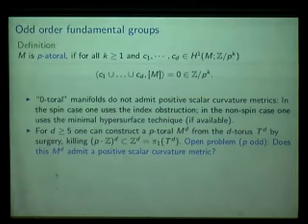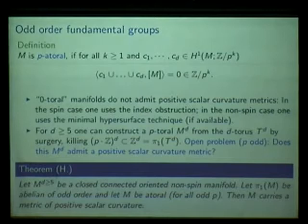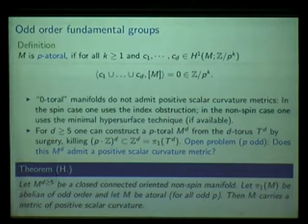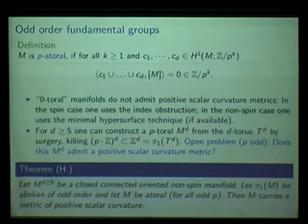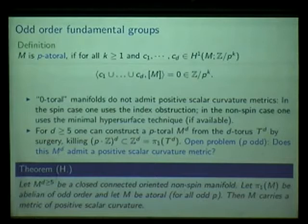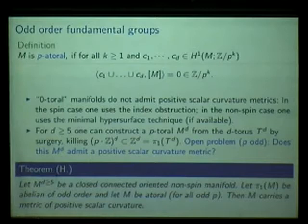I would like to show a path to prove the existence of positive scalar curvature metrics when the fundamental group of M is abelian and of odd order, and p-toral for all odd p. Looking at one prime at a time, this amounts to passing from elementary abelian p-groups to more general abelian p-groups of the form Z/p^{k_1} × ... × Z/p^{k_r}. This is the generalization I would like to present, and I'll explain what topological methods we use to construct these metrics.